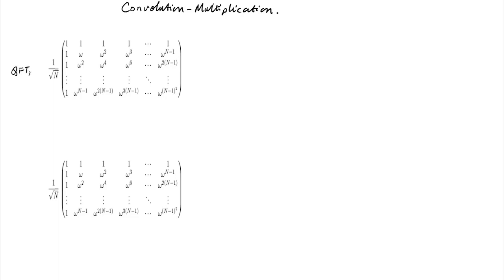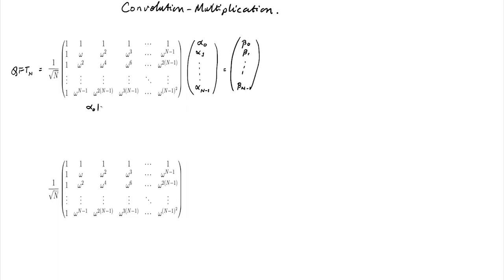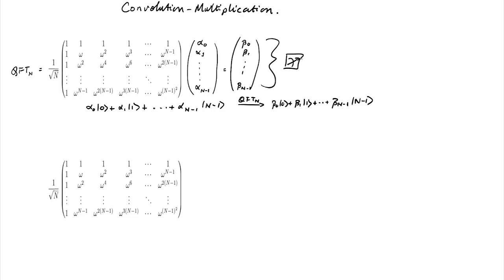Let's say this is our n-dimensional Fourier transform. Our input superposition is alpha-naught through alpha n-minus-1, and our output is beta-naught through beta n-minus-1. If you start with this input state and apply the Fourier transform, you get that output state. We intend to do Fourier sampling: we take this output state, measure it, and observe some index j.